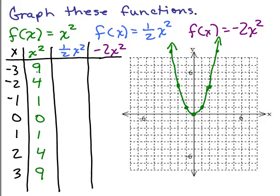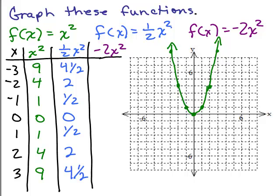One half x squared will be half of whatever x squared is. So half of 9 is 4 and a half, half of 4 is 2, half of 1 is one half, half of 1 is one half, half of 4 is 2, and half of 9 is 4 and a half. If we graph y equals one half x squared, the vertex is still at (0, 0) but we go over 1 and up one half.